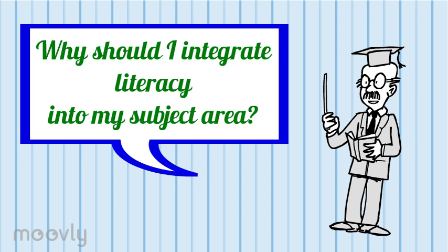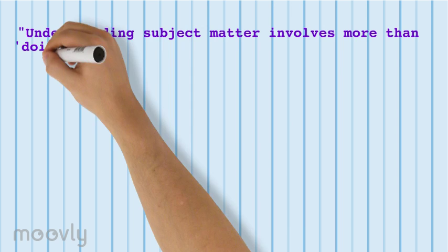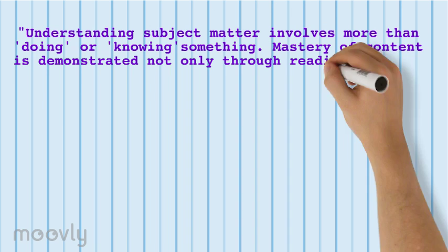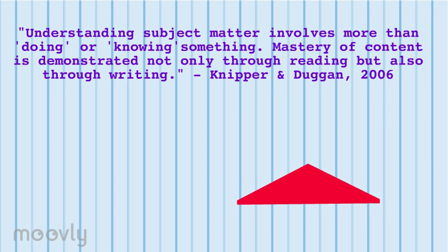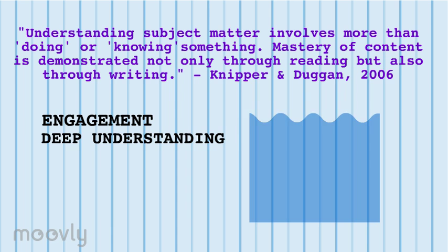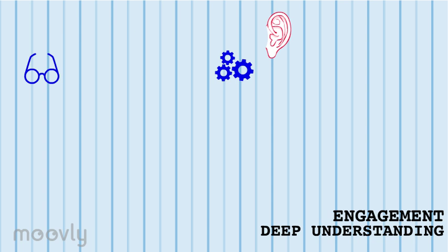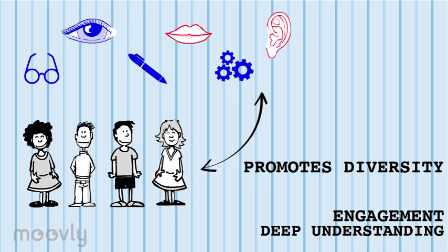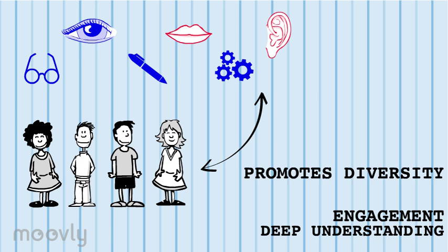Let's discuss the benefits of incorporating multiple literacies into your classroom. Nipper and Dugan state that understanding subject matter involves more than doing or knowing something. Mastery of content is demonstrated not only through reading, but also through writing. Appealing to more than one literacy strand can help us increase student engagement, leading to deeper understanding of your subject matter in any area of the curriculum. Emphasizing multiple literacies allows students to connect with what they are learning and promotes diversity within the classroom. When students have the chance to discuss their thoughts, feelings, and background regarding the subject matter, it allows them to better understand themselves and each other.